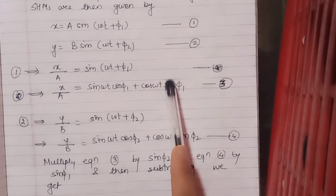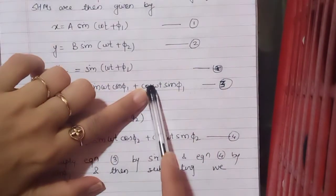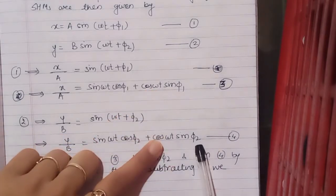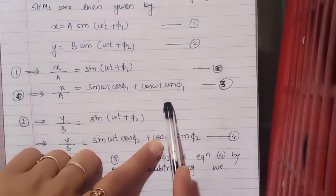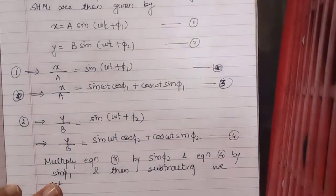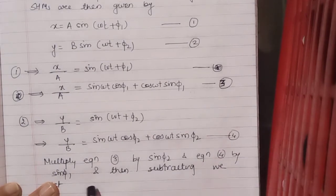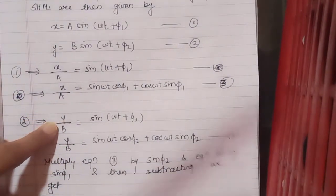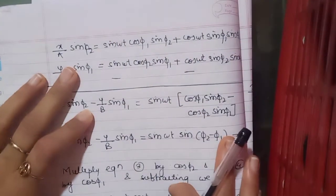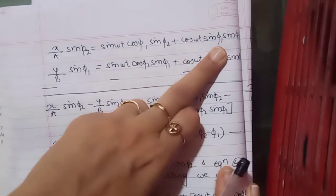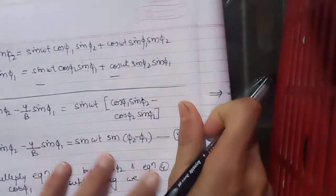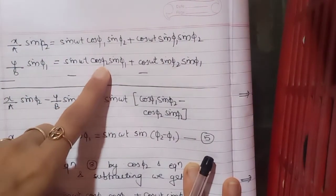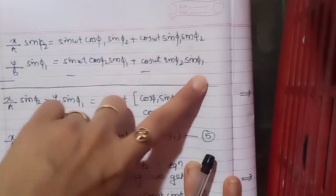Now I want to eliminate the cos ωt term. So what I will do is multiply equation 3 by sin φ₂ and equation 4 by sin φ₁, so that both these terms will become equal and can be cancelled out when subtracting. Multiplying equation 3 by sin φ₂ gives x/a · sin φ₂ = sin ωt cos φ₁ sin φ₂ + cos ωt sin φ₁ sin φ₂. Multiplying equation 4 by sin φ₁ gives y/b · sin φ₁ = sin ωt cos φ₂ sin φ₁ + cos ωt sin φ₂ sin φ₁.